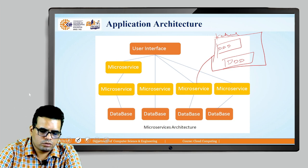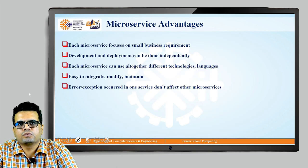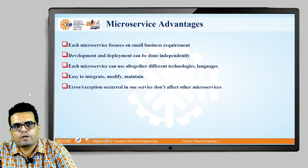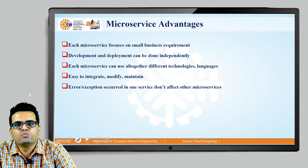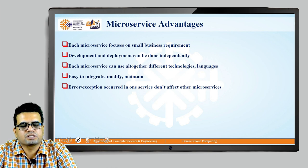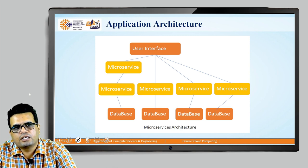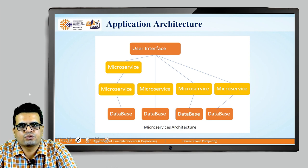Key advantages of this approach: each microservice focuses on a small business requirement, so development and deployment can be done independently. Each microservice can use entirely different technologies and languages. It is easy to deploy, integrate, modify, and maintain. Errors or exceptions in one service will not affect other microservices. Since each microservice is independent, if anything goes wrong, only that particular service or business logic is affected — it will not impact the entire ecosystem of the application.